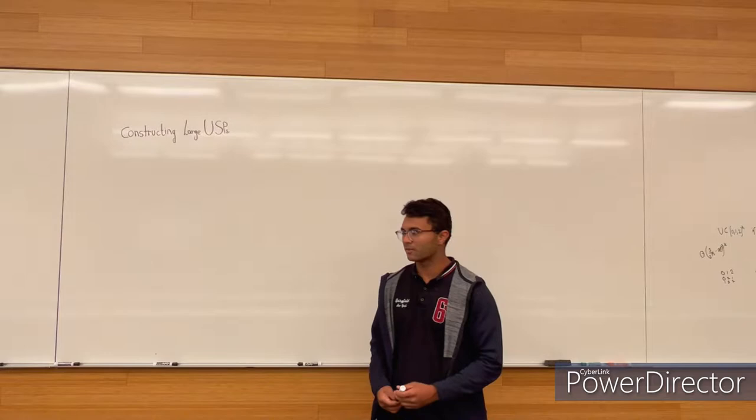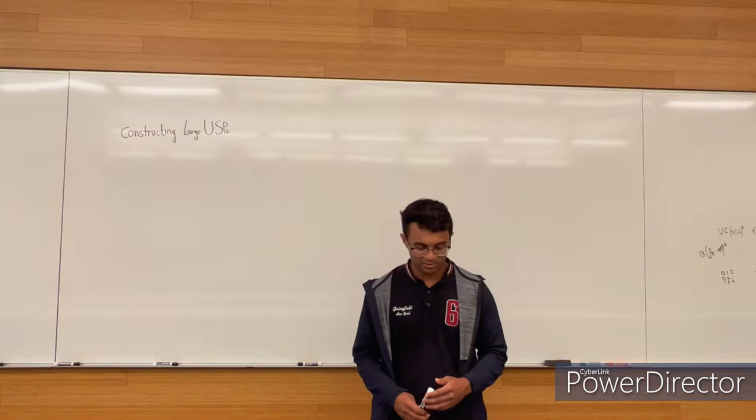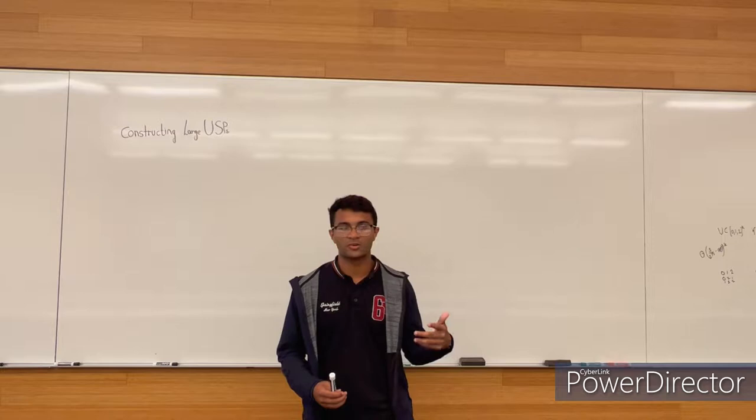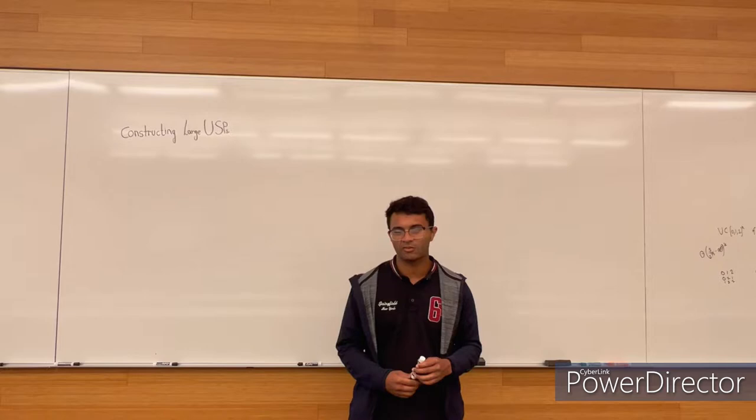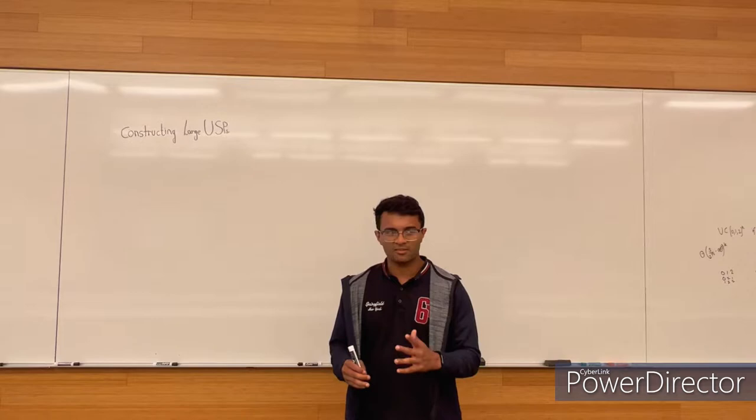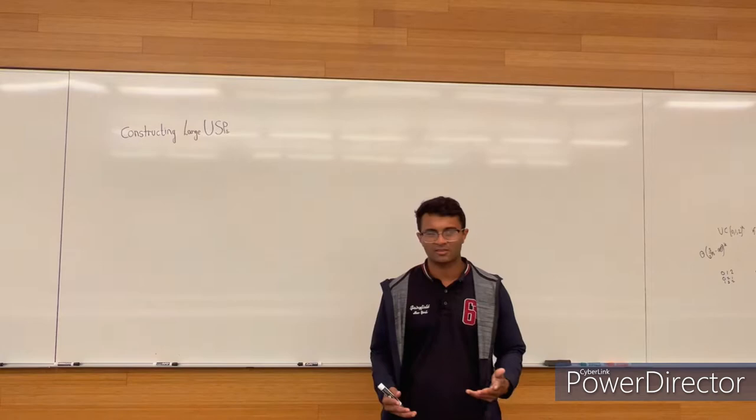In the Coppersmith-Winograd construction of matrix multiplication, the best methods produced have shown you can decrease the exponent of matrix multiplication all the way to O(n^2.37). They used the concept of a USP — a uniquely solvable puzzle — and more specifically, the idea is that if you can come up with very large uniquely solvable puzzles, you can push down the exponent of matrix multiplication.